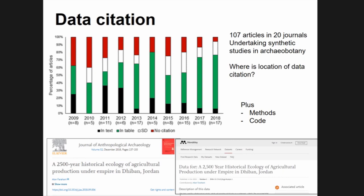Over time there is a bit of improvement in data citation, which is good, but there's still a significant lack. Interestingly, a reasonable number of citations appear in supplementary data, which means you don't get a citation link on Google Scholar — so even if someone cites your data paper it doesn't help with your h-index or citation count and you can't trace the citation links. There are now a few papers making code available, which is great. One favorite example is work by Perahani, at Nevada, which is a typical archaeobotanical primary data article — the data is all available and code is there too.